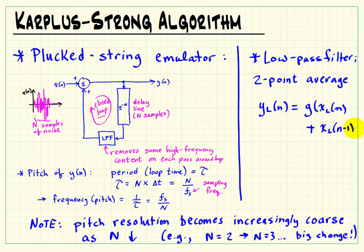The past input is our x(n-1). I'm using the notation here y_L and x_L to specifically indicate the input and output of the low-pass filter.